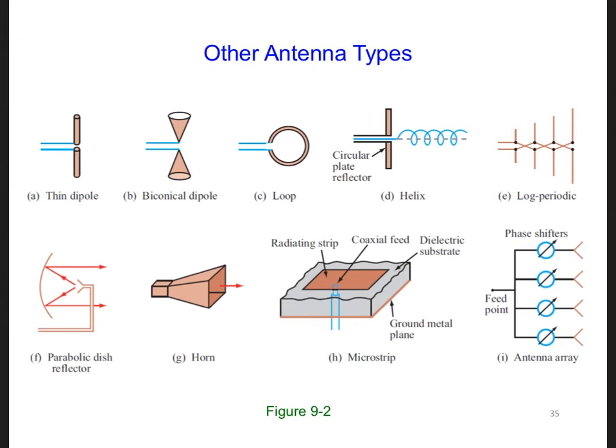And here are some other types of common antennas. The dipole we already talked about. A biconical dipole is a more compact dipole than a regular dipole. It has some additional features that are desirable in some cases.